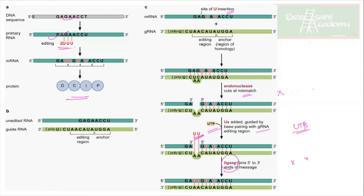So from the DNA sequence you get an unedited RNA; the guide RNA base-pairs with it; wherever base pairing is imperfect, U is inserted by the endonuclease cutting, adding UTP, and ligase resealing. The final edited mRNA has the new sequence — for example, G, A, U, U, G, U, A, U are added. This is the guide RNA editing mechanism in trypanosomes.